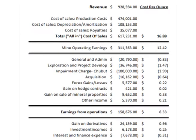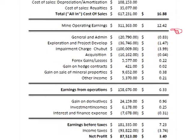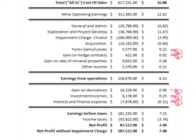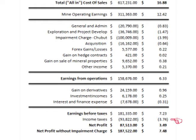For Pan Am's complete cost to produce silver, adding on to the total cost of $16.88: $0.83 per ounce for administration cost, $1.47 per ounce for exploration cost, $0.64 per ounce for acquisition cost. They had a $0.38 gain from the sales of mineral properties, a $1.14 gain from finance, investment, derivatives, hedging, and interest costs and credits, and a $0.21 gain from other miscellaneous income. They also had $3.74 per ounce for taxes, plus $3.99 per ounce for the Navidad write-down.